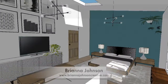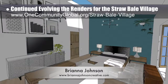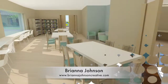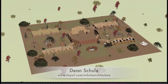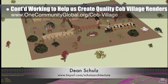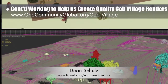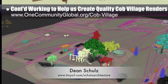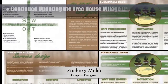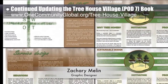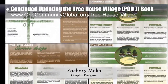Brianna Johnson, interior designer, continued evolving the renders for the straw bale village pod 2 — shown here is the initial layout for rendering one of the studio residences and the initial render for the communal computer and study room. Dean Chills, architectural designer, further developed the cob village pod 3 renders; update 23 of his work continued adding trees and textures to the cob village overview images. Zachary Maline, graphic designer, continued updating the treehouse village pod 7 book — shown here is another revision of the SWOT analysis page and work in progress for the sustainable and service design pages.